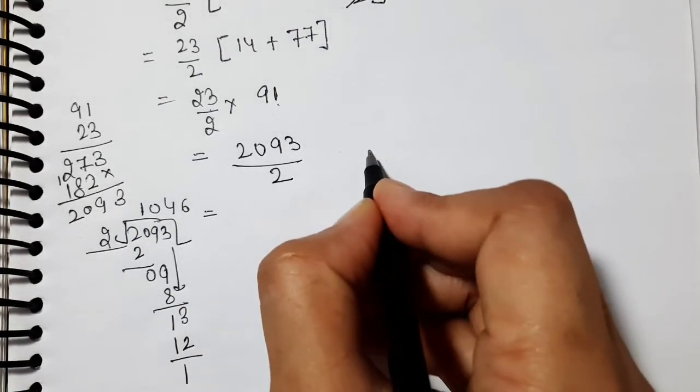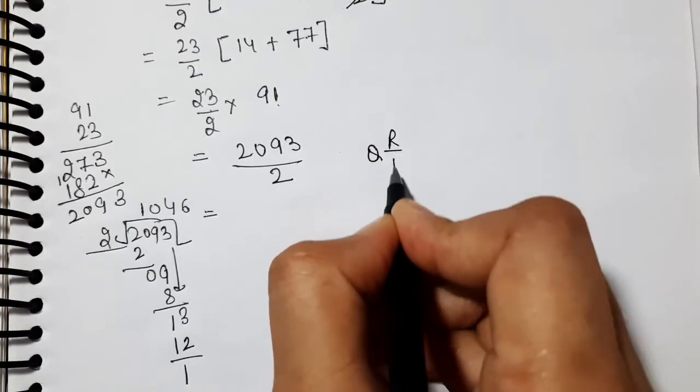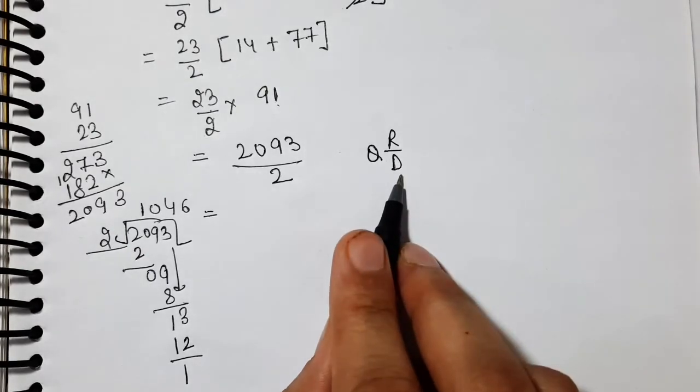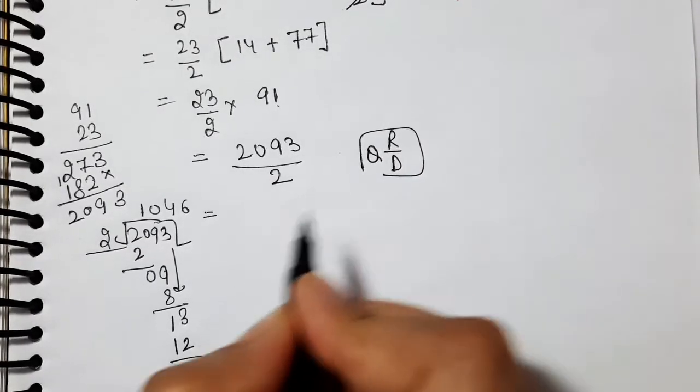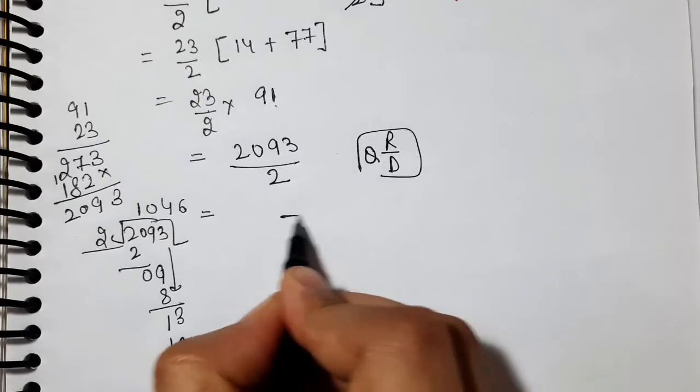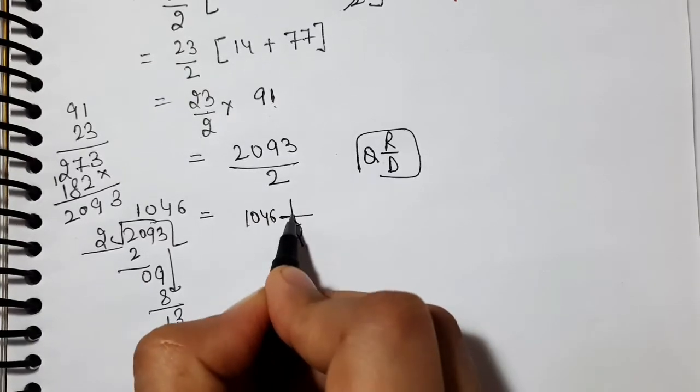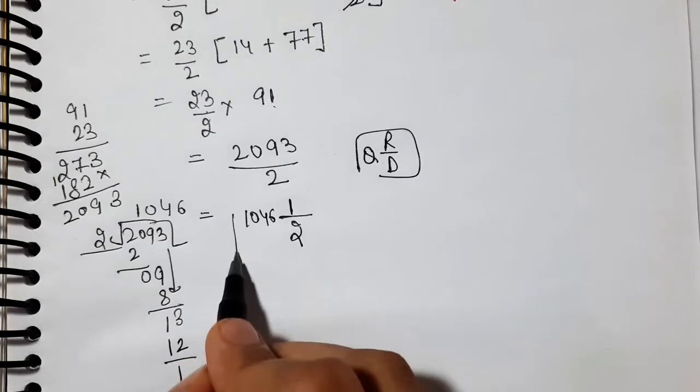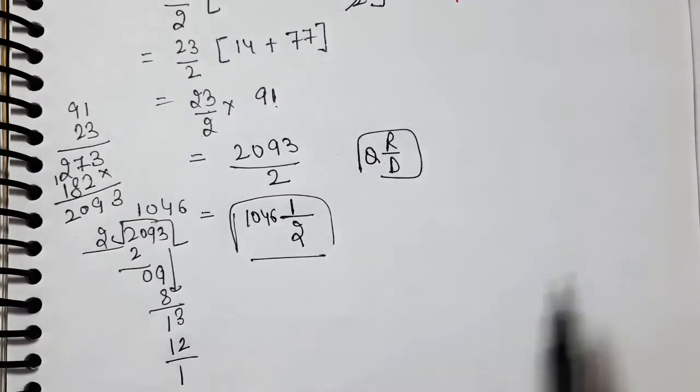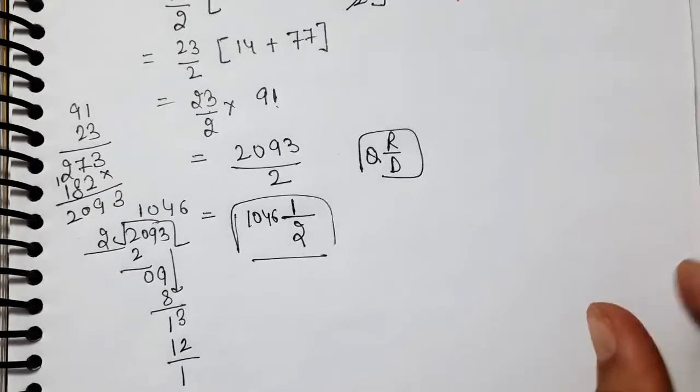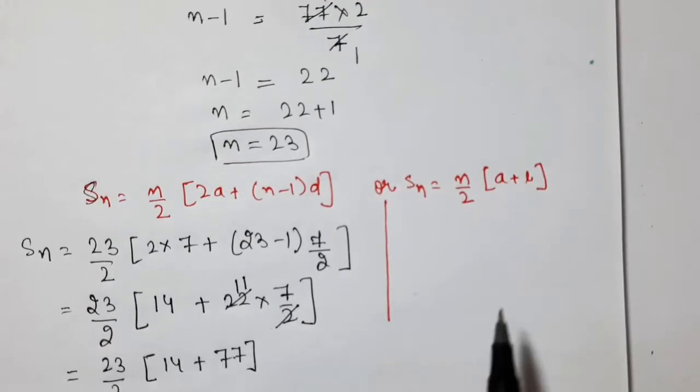I'll show you solving with both methods. S_n equals n by 2, n is 23 by 2, times 2a, a is 7, plus n minus 1, which is 23 minus 1, times d, which is 7 by 2. So 23 by 2 times 14 plus 22 times 7 by 2. Cutting is possible here - 2 ones are 2, 2 elevens are 22.